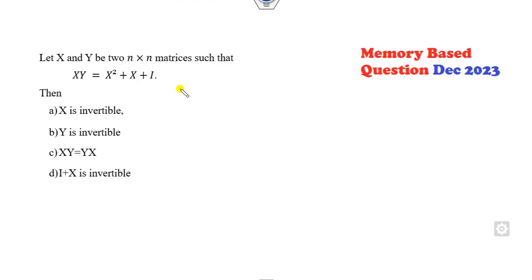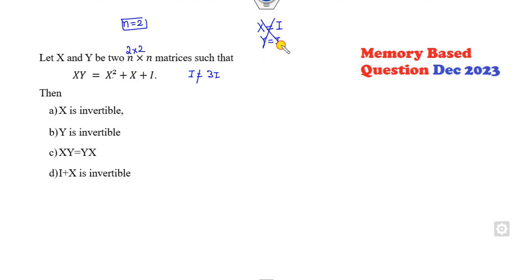The question is: if X and Y are n×n matrices, firstly you can choose n=2 so that your calculation becomes easier. Always choose X as the identity matrix and Y as the identity matrix, and check which of the following options are discarded. I into I is I; I squared is I — this is 3I, which is not satisfied. So this option is not satisfied. Next, choose X = -I, Y = -I. Is it satisfied? This is I; minus I squared is again I — it's satisfied.